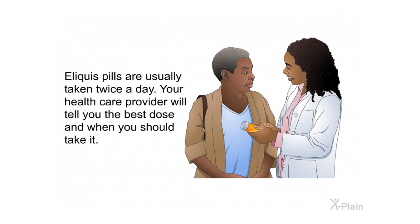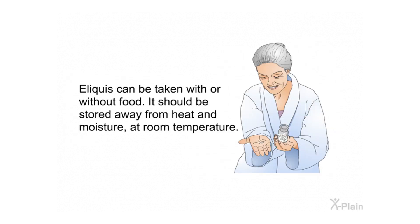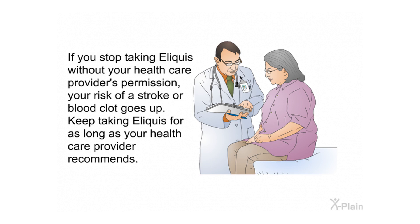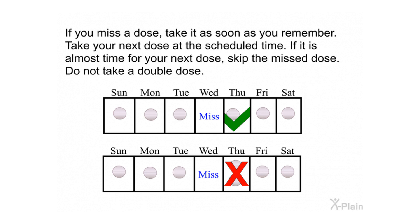Eliquis pills are usually taken twice a day. Your health care provider will tell you the best dose and when to take it. Eliquis can be taken with or without food and should be stored away from heat and moisture at room temperature. If you stop taking Eliquis without your health care provider's permission, your risk of a stroke or blood clot increases. If you miss a dose, take it as soon as you remember, then take your next dose at the scheduled time. If it is almost time for your next dose, skip the missed dose — do not take a double dose.